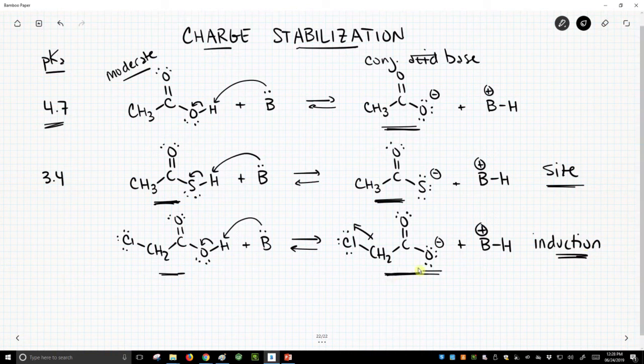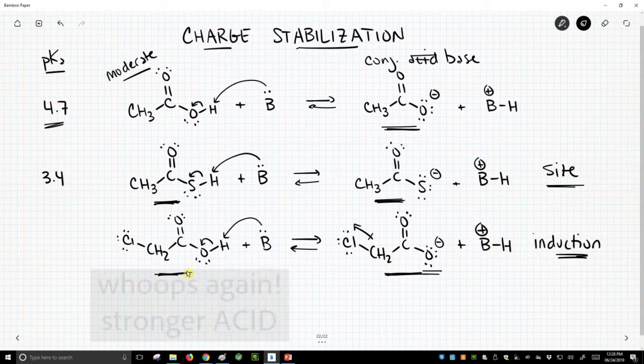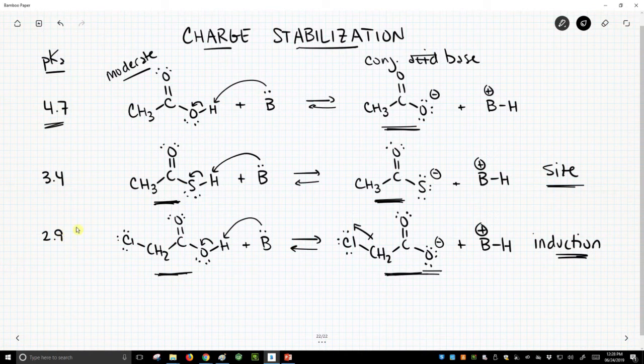That would make the resulting anion more stable, less reactive, less basic, a weaker base, which means the original acid should be a stronger acid. And in fact, it is. It's about pKa 2.8, 2.9.